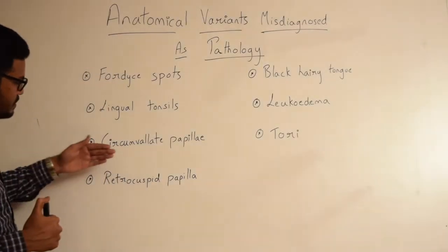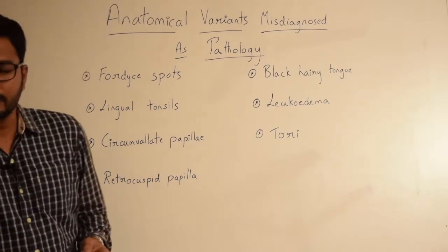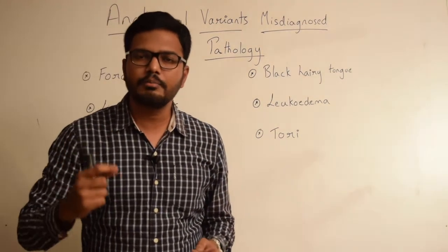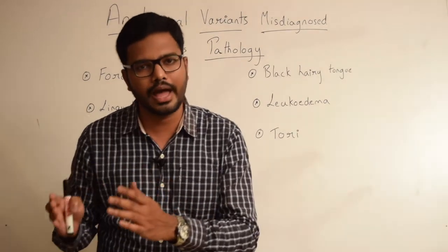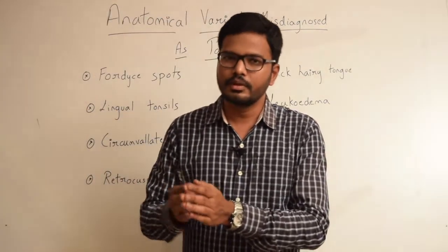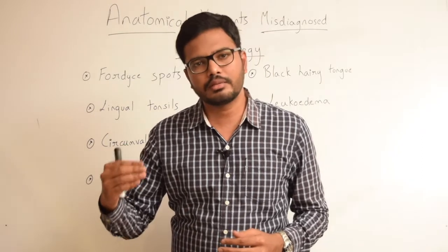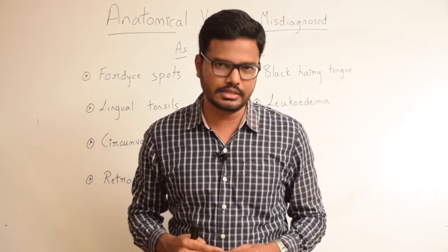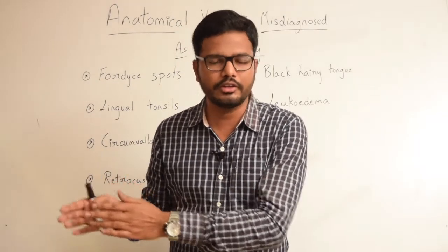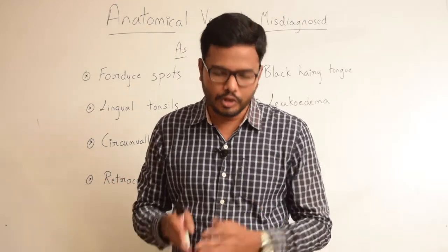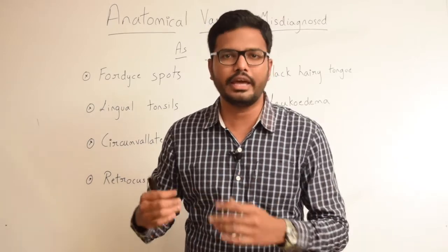Then we have retrocuspid papilla. Retrocuspid papilla are small, pink, firm nodules usually 0.5–4 mm in diameter, present on the attached gingiva lingual to either the mandibular canine or lateral incisor. They are often found bilaterally but can also be found unilaterally. They are very much prominent during childhood and disappear with age.